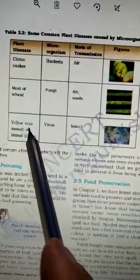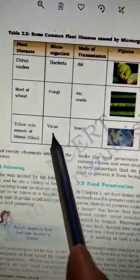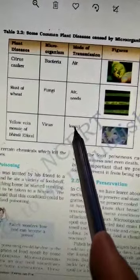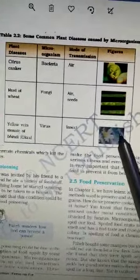Next one is yellow vein mosaic of bhindi okra. Microorganism is virus. Mode of transmission is insect. And you can see here a picture of the disease.